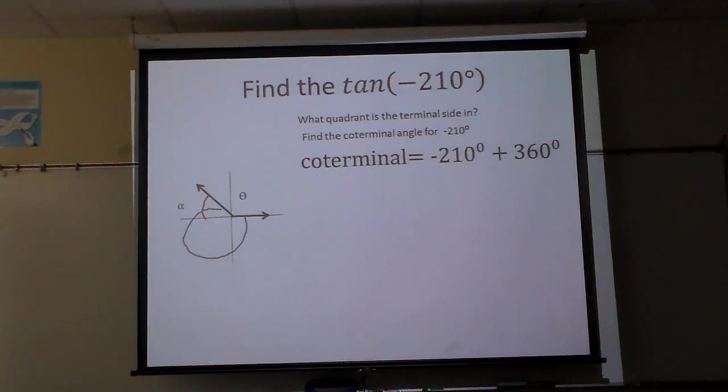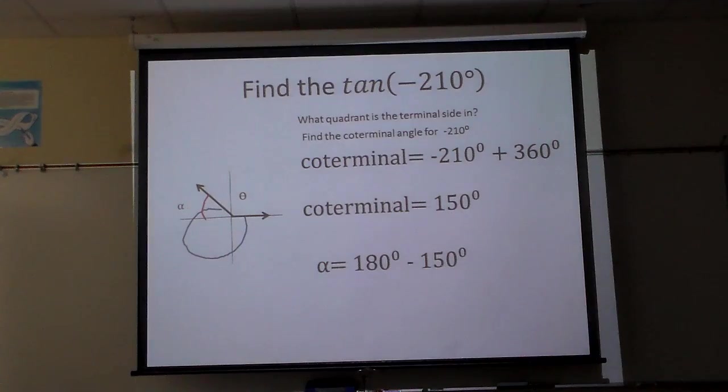Technically the book says add 360 to each side. You get 150. Well how far is 150 from 180? 30. How far is 210 from 180? 30. I think that way is a lot easier. How far is it from basically 180 as long as you're in quadrant two or three?